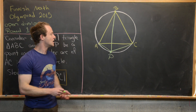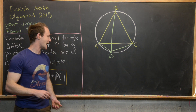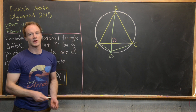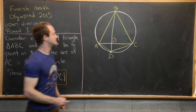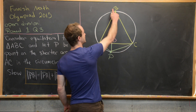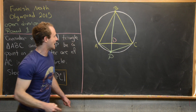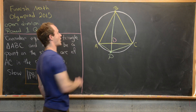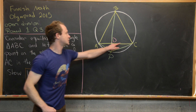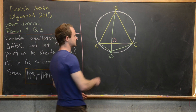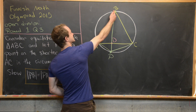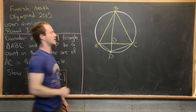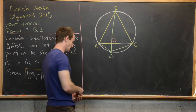Notice that line segment PB crosses line segment AC, and let's call that point of intersection D. Now we're going to use a fact from geometry: angle ACB has arc AB, and angle APB has the same arc AB. That means these two angles are congruent.